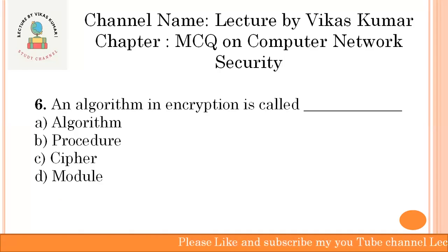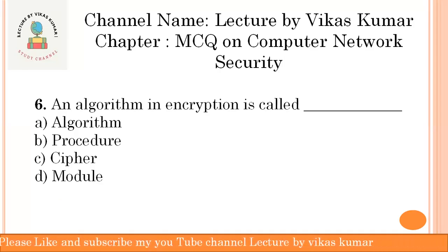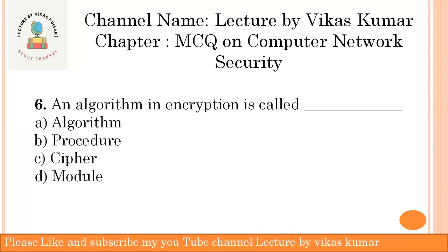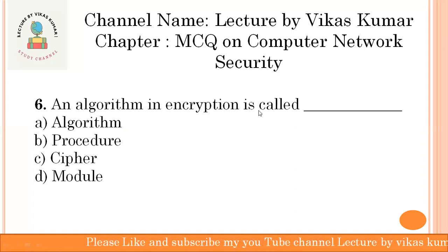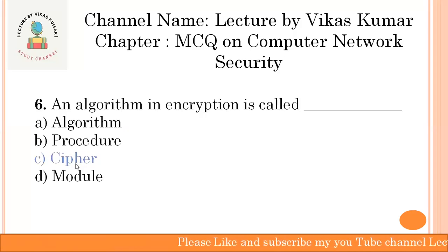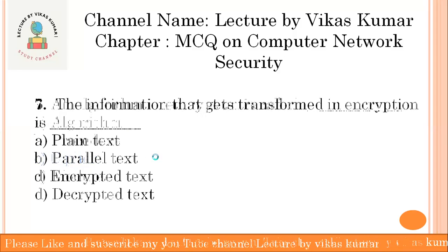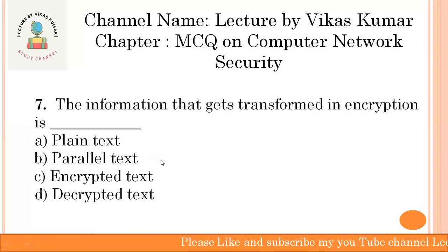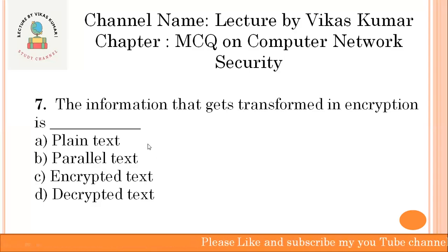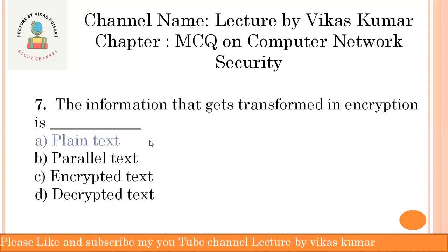An algorithm used in encryption is called a cipher. Encryption is a process by which your message or data is kept secret. The information that gets transferred in encryption — what we send for encryption — is called plain text. Plain text, option A, is the correct answer.